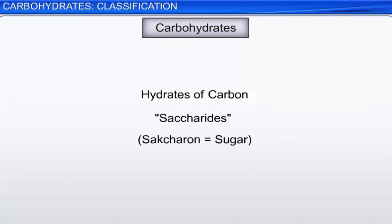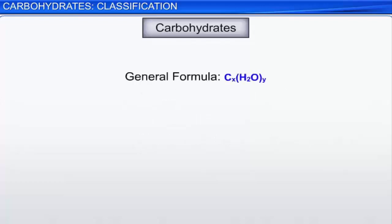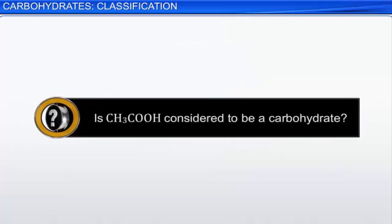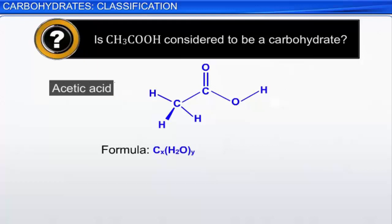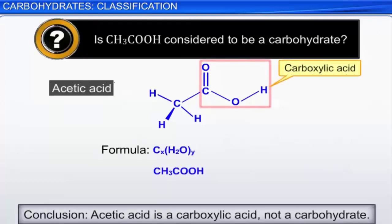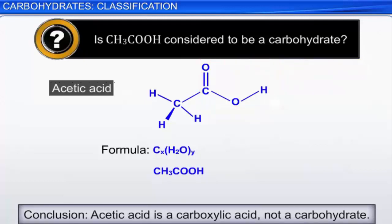Many, but not all carbohydrates, have the general formula CX(H2O)Y. For example, glucose: C6H12O6. Its formula can be rearranged to fit the general formula. Is CH3COOH considered to be a carbohydrate? Perhaps you recognize this compound as acetic acid. Its formula does fit the pattern, but acetic acid is a carboxylic acid, not a carbohydrate. The formula isn't enough to define a substance as a carbohydrate.